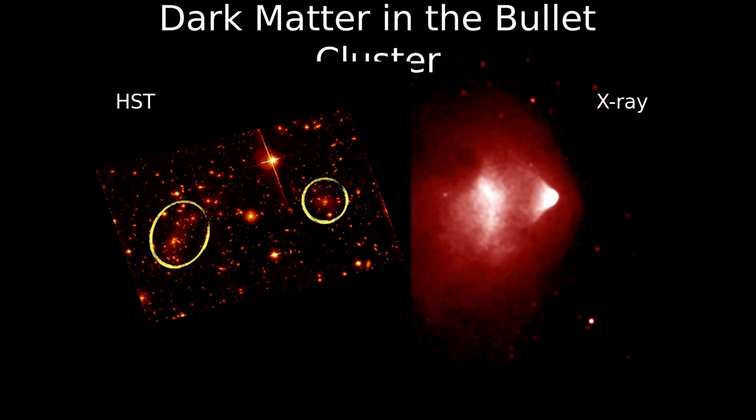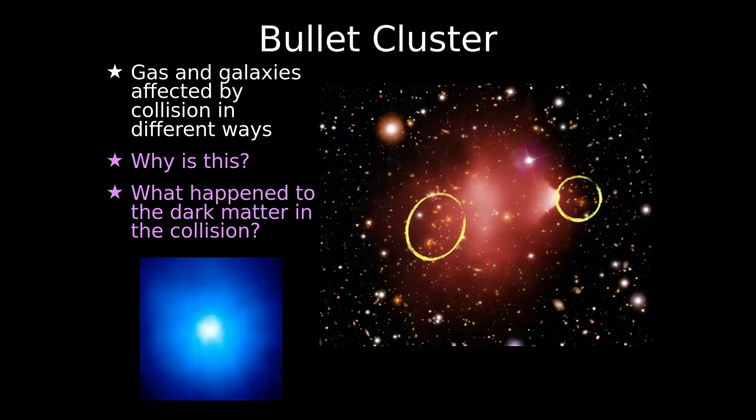We can overlay the two images, and this is really interesting because it tells us the galaxies haven't interacted — they've passed through each other and essentially ignored each other. The gaps between galaxies are big enough that they don't collide, while the gas has completely collided, formed this shock front and bullet shape. Now the gas and the galaxies are in different positions in the sky.